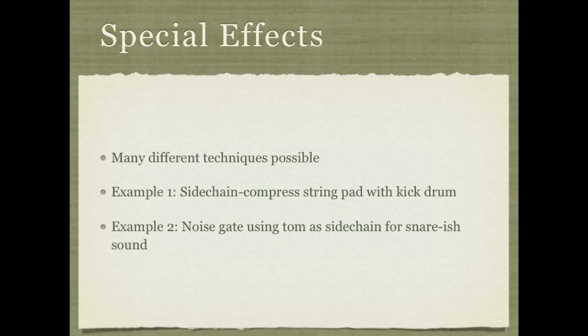For our second example, we'll use a sidechain with a different dynamics processor — in this case a noise gate. We've set up some white noise and we're going to use the gate to only let that white noise through when a tom-tom sound comes through, like this.